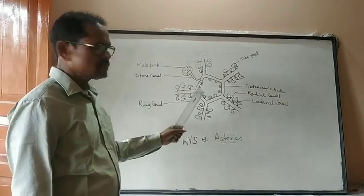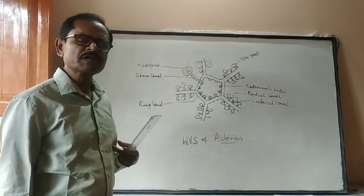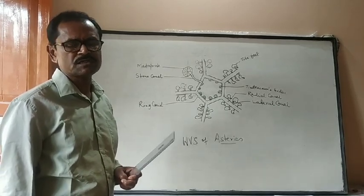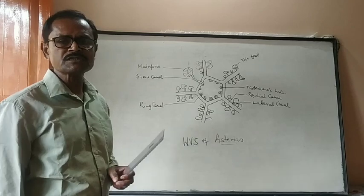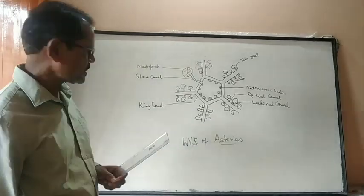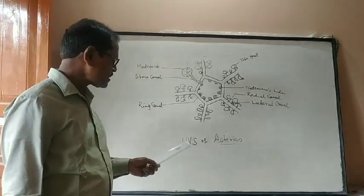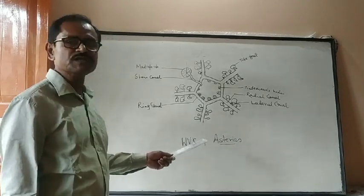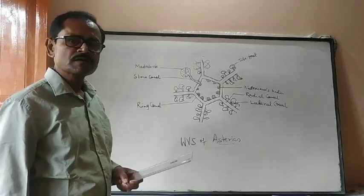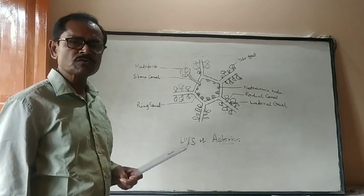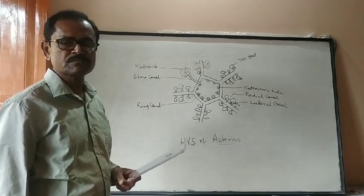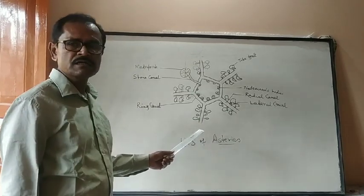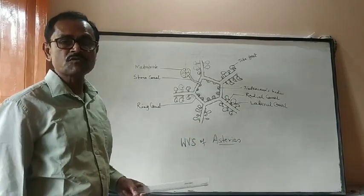In this phylum Echinodermata, there is a very unique feature found in that organism, that is water vascular system, which I have written here WVS. Water vascular system, also called ambulacral system, is one type of modified coelomic system.